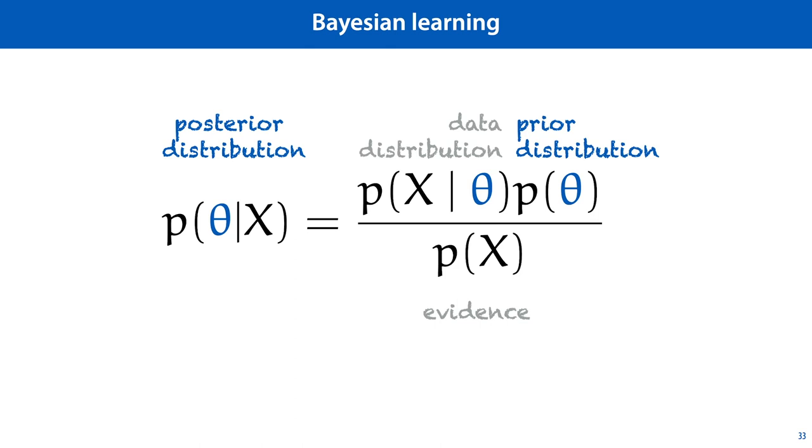Note that Bayesian learning does, in principle, not require us to search or optimize anything. If we can work out the posterior distribution and represent it somehow, then we have everything we need.